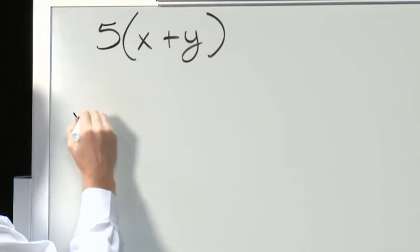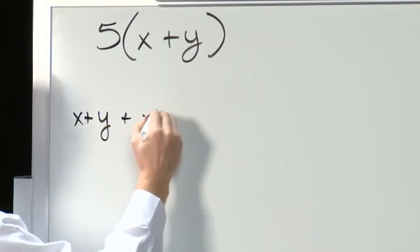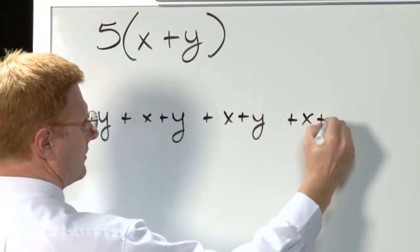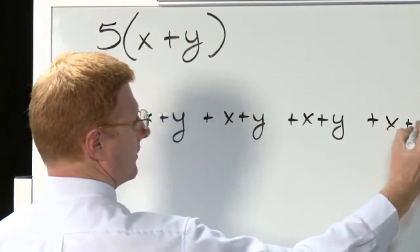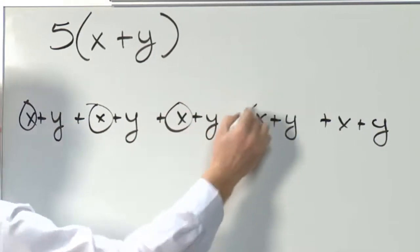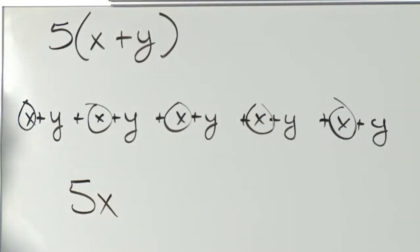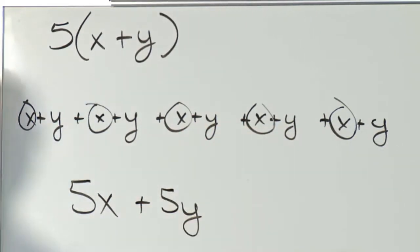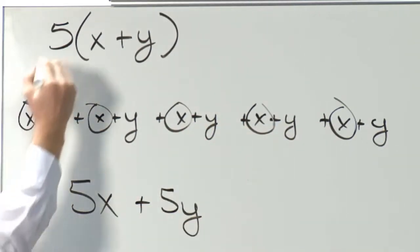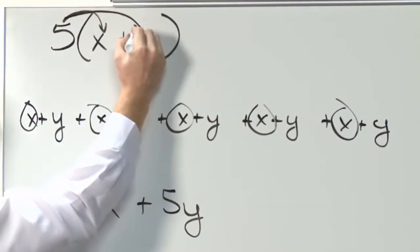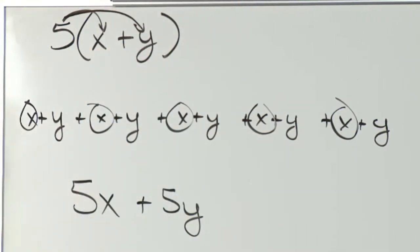See what this really looks like. There's one of them, two, three, four, five. How many x's do I have? Five x's. And I have five y's that I can put together. You see what happens is this five jumps in here and jumps in there, and it gets distributed. It's like this five is being handed out to everything in the parentheses.